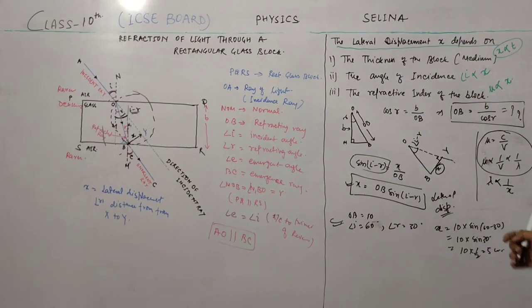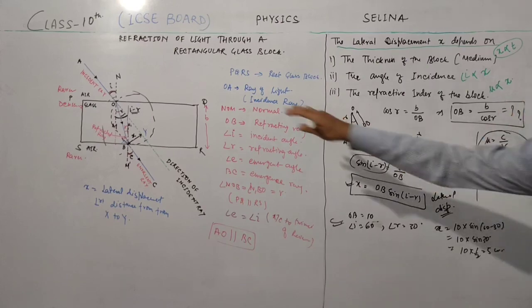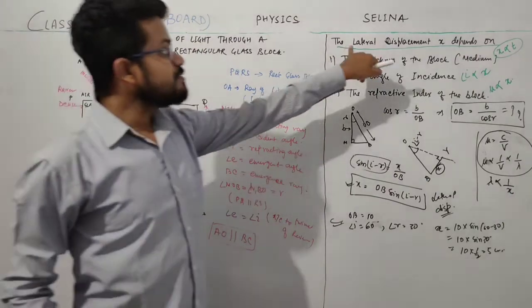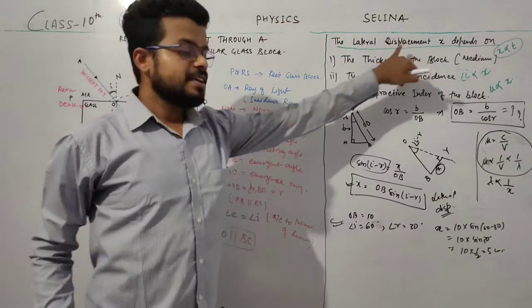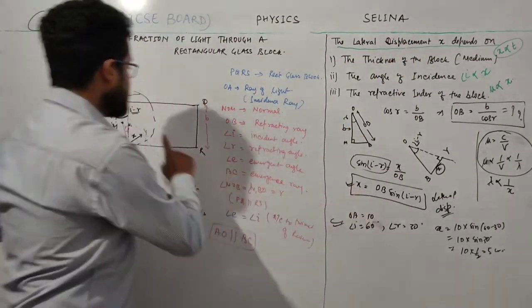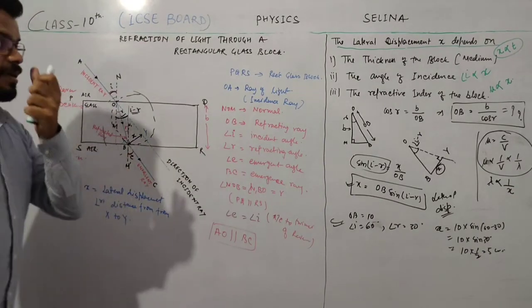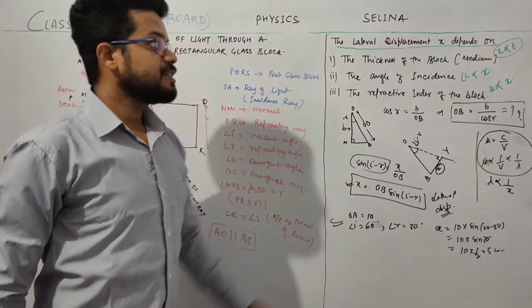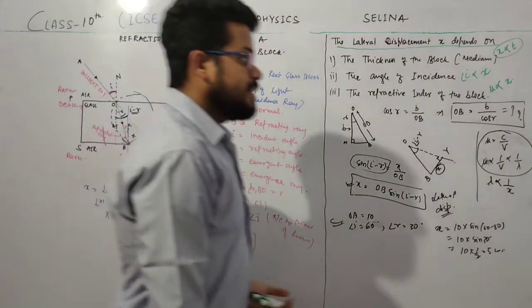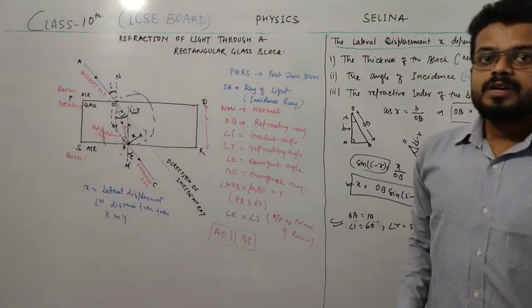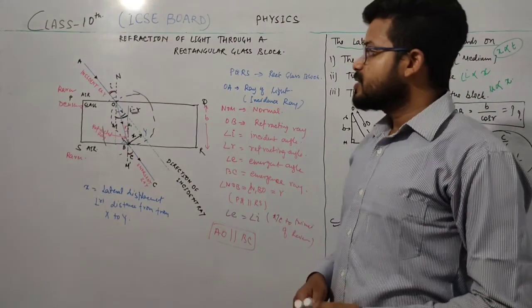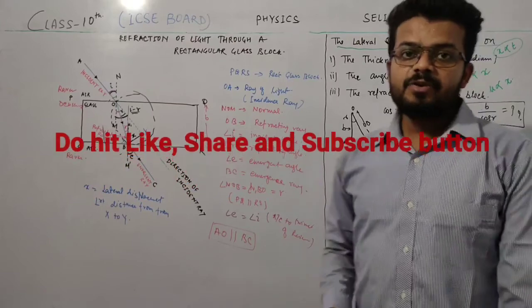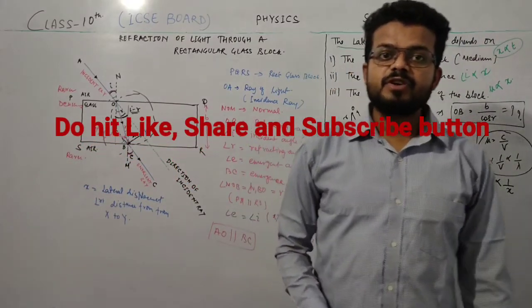So this is all about the refraction of light through a rectangular glass block. The very important term here is lateral displacement, and we derived its value from the diagram. These are the factors on which lateral displacement depends. If you have any confusion or doubt, please put a comment in the comment box or ask through a message or call. Stay home, stay safe, and thank you for watching this video. Have a good day.